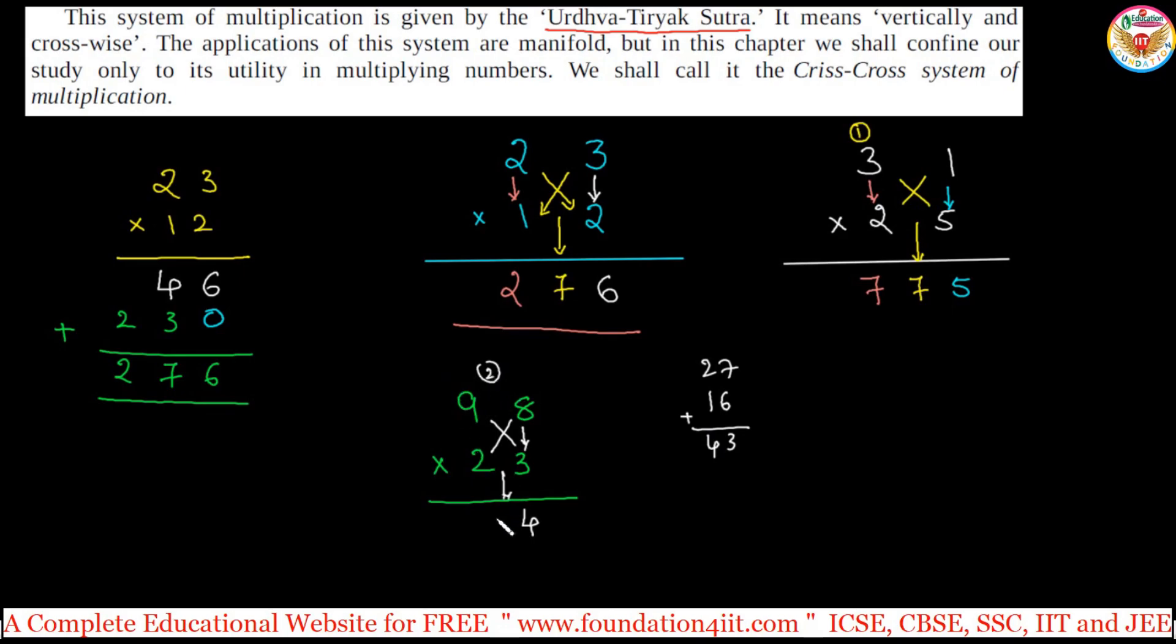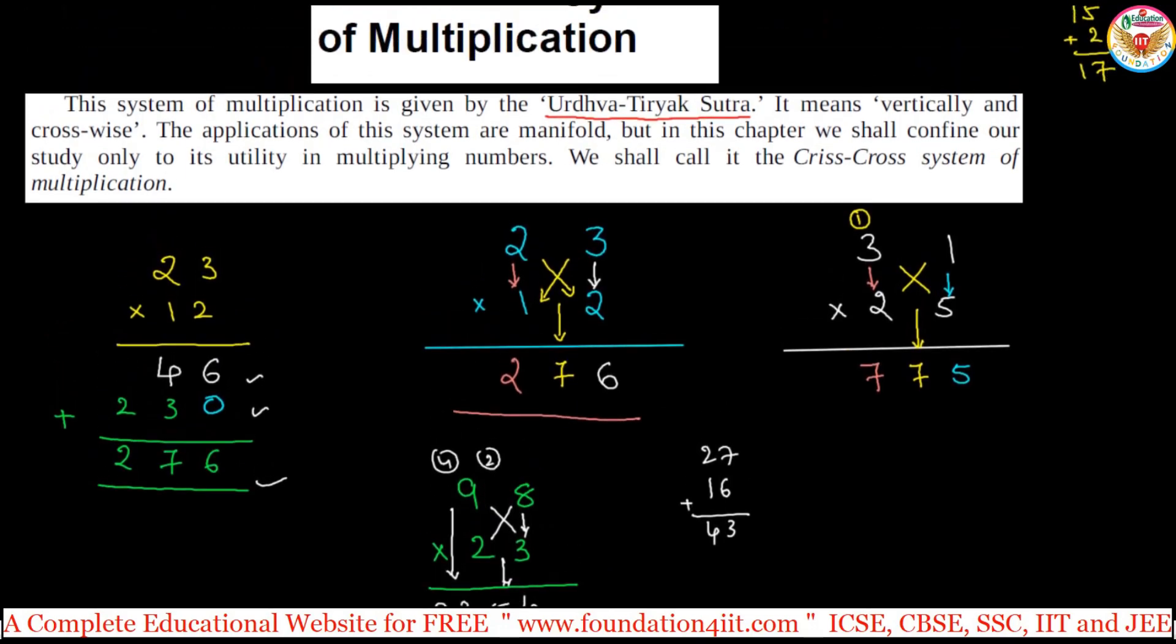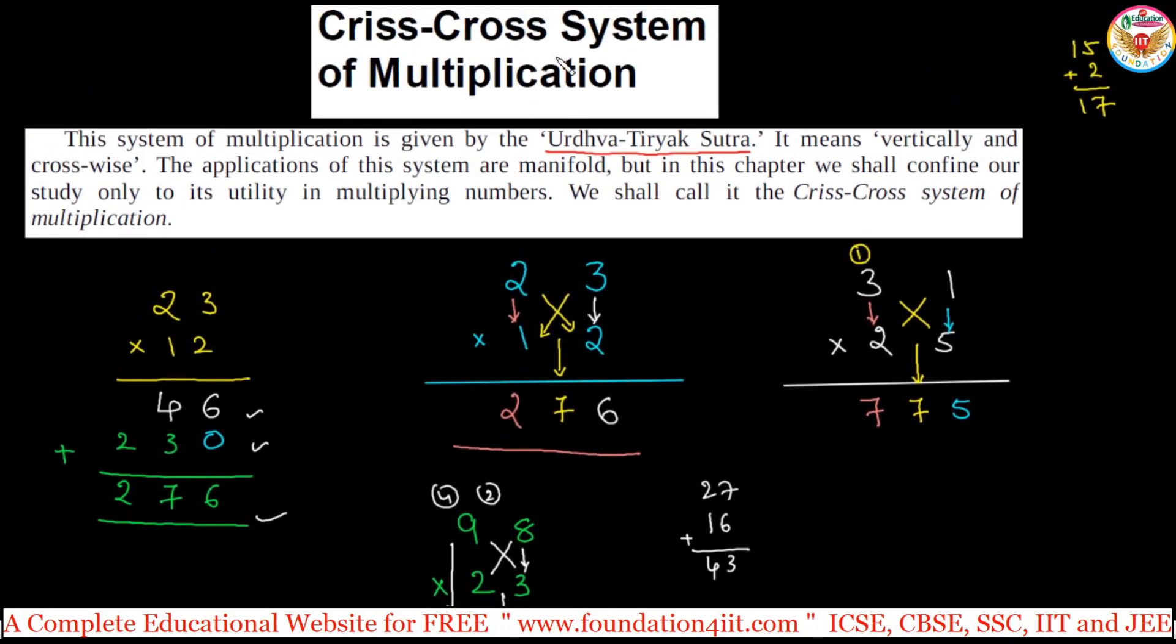Again, 9 into 2 is 18, plus 4, so 22. So 2254. Instead of taking lengthy steps, so this is our 2 by 2 order. This method you can follow. You can take few more examples and practice. Criss-cross system of multiplication, this is the technique you can apply for the 2 by 2 order.